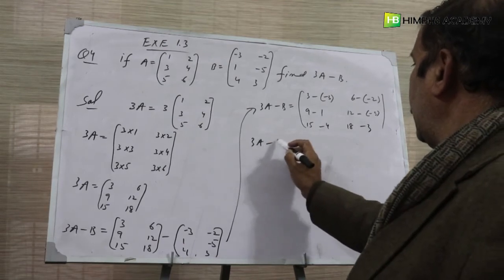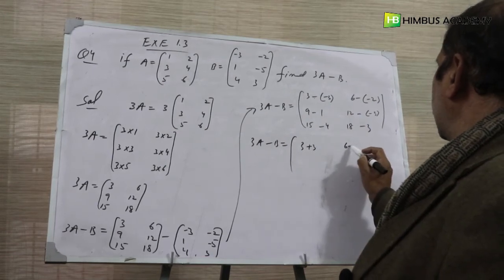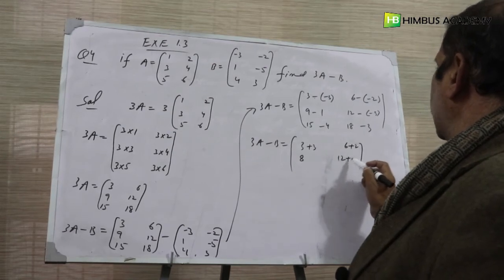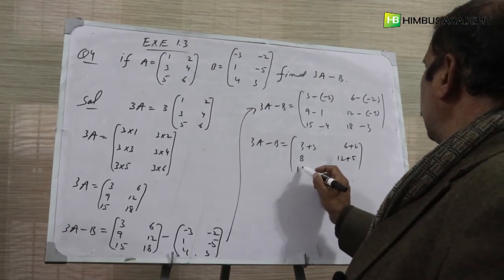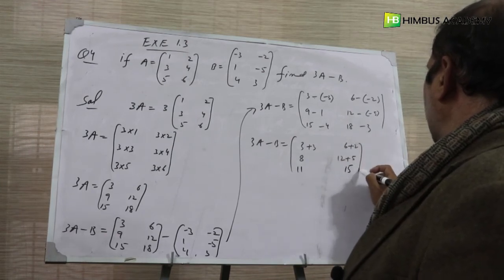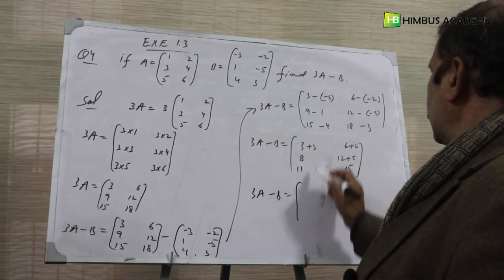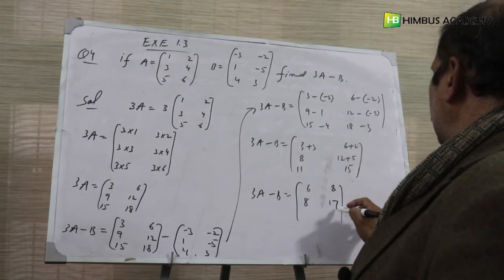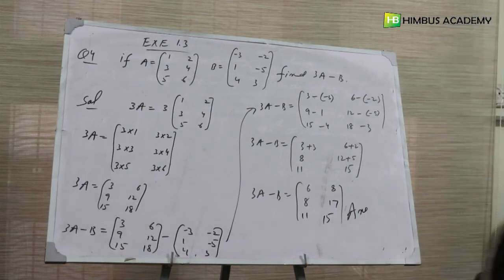So 3A minus B equals: 3 plus 3 is 6, 6 plus 2 is 8, 9 minus 1 is 8, 12 plus 5 is 17, 15 minus 4 is 11, 18 minus 3 is 15. Therefore 3A minus B equals 6, 8, 8, 17, 11, 15. This is answer for number 4.